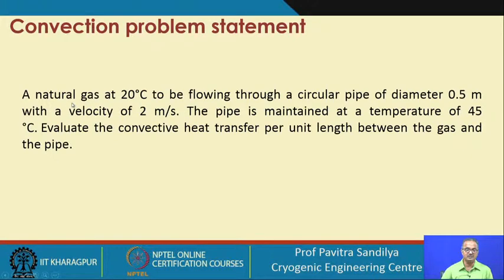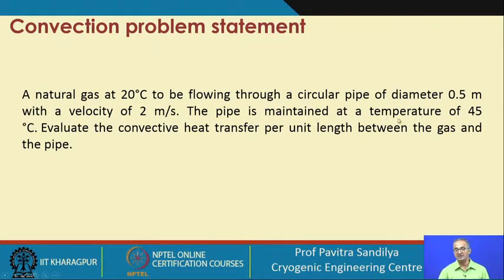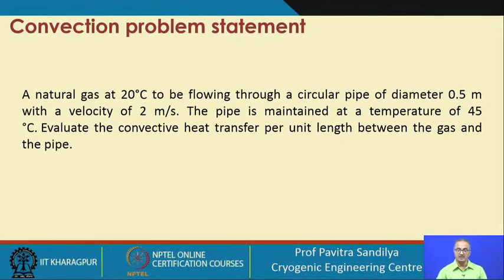The problem states that natural gas at 20 degrees centigrade is flowing through a circular pipe of diameter 0.5 meter at a velocity of 2 meter per second. The pipe wall is maintained at a temperature of 45 degrees centigrade. We have to figure out the convective rate of heat transfer per unit length of the pipe between the gas and the pipe.